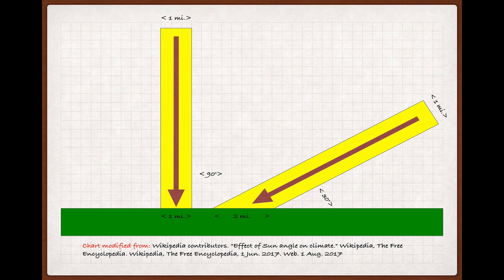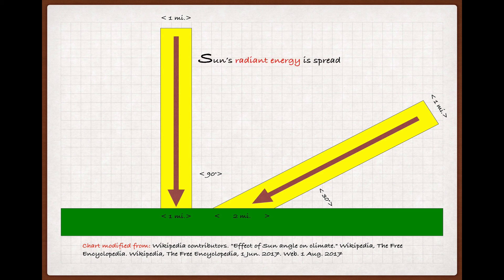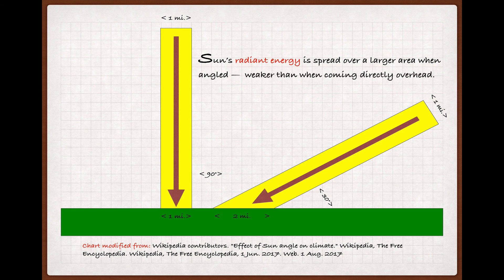Both beams of sunlight are the same size and have the same amount of radiant energy from the sun. But in the case of the second beam, the radiant energy is spread over a larger area because of the angle it's coming in at. And so the energy is weaker than when coming from directly overhead.